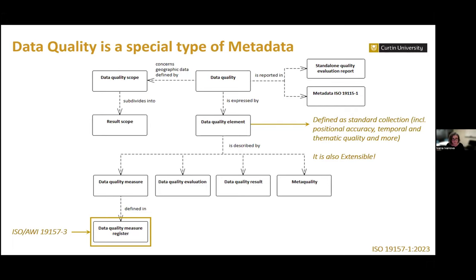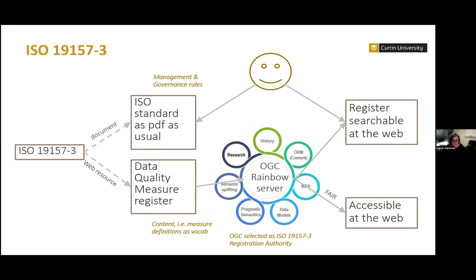The data quality measure register is the subject of ISO 19157 Part 3. What that is going to be is expressed in a diagram produced by my colleagues from OUSD and my colleague Dawson, with whom we are working on this. ISO 19157 Part 3 will be two full documents: a traditional PDF document holding all content related to governance groups and management of registers — things like who owns what and the procedure to submit or retire measures from the register — and then a web-accessible collection of data quality measures, which will be machine-actionable, human-interpretable, and immutable.